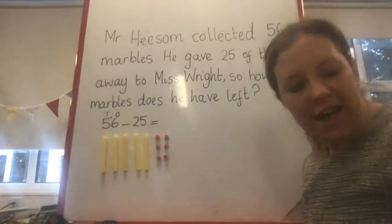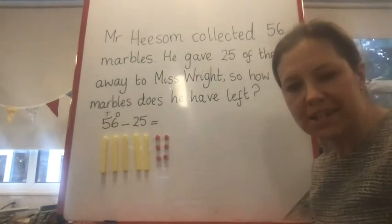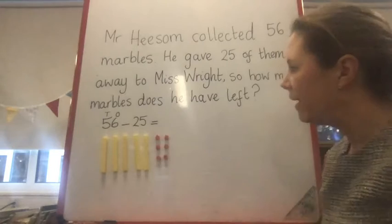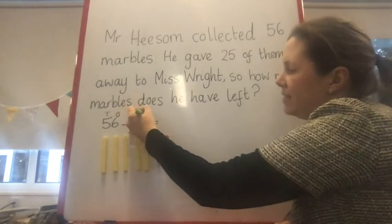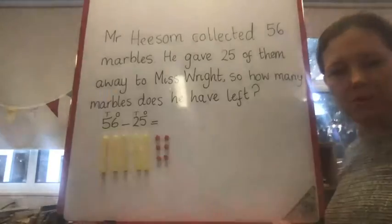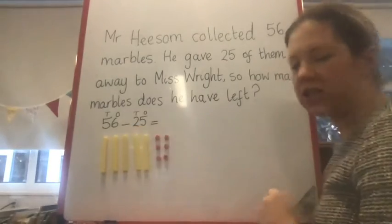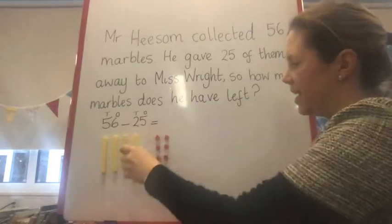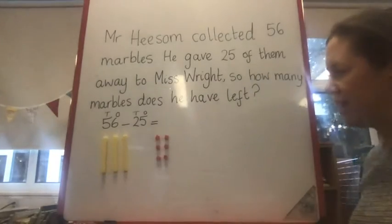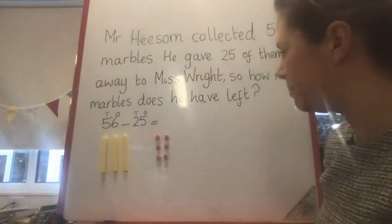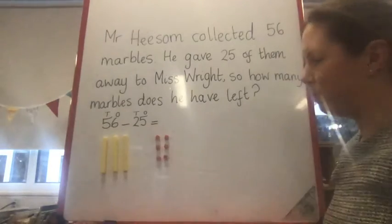Now I'm going to have a look at 25 because that's the number I've got to take away. I can see that 25 has got two tens and five ones. So the first thing I'm going to do is take away the two tens, which is 20: 10, 20. That leaves me with three tens, so it's going to be a 30s number, and then I've got to take away five ones.